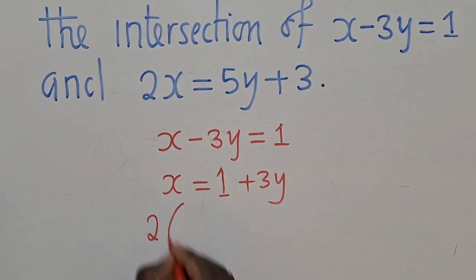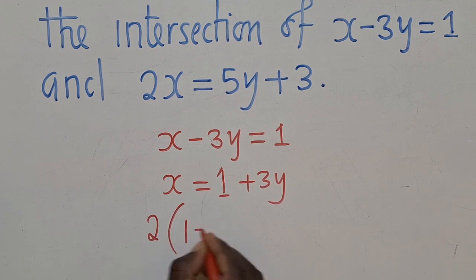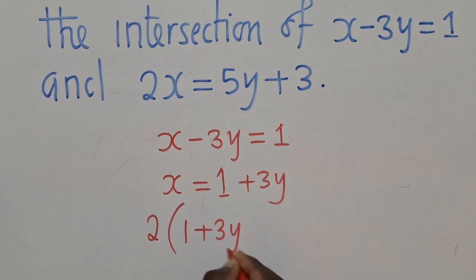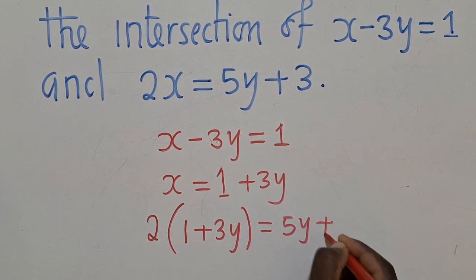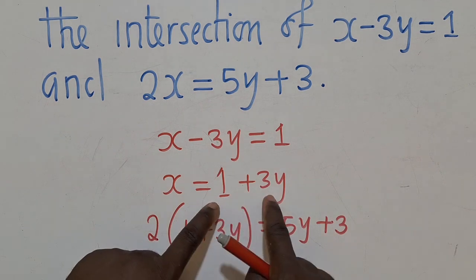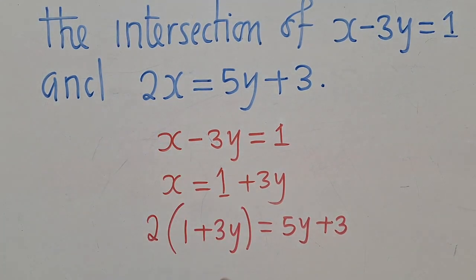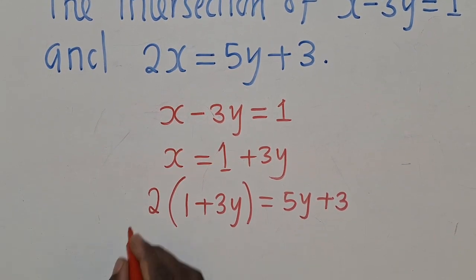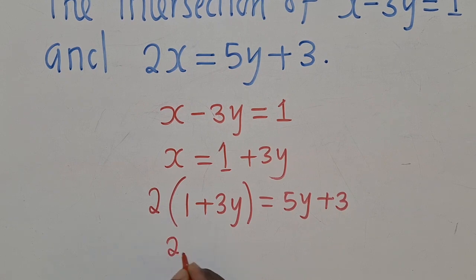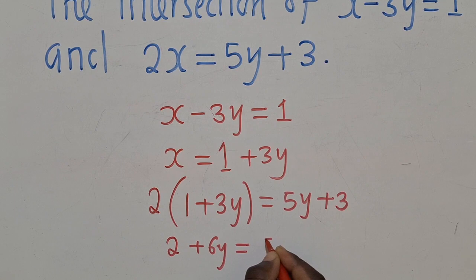So we shall have 2, open bracket, 1 plus 3y, close, is equal to 5y plus 3. So I've substituted, I've just gotten this and put it right here on the other equation. You can see it's right over here. So this entails that we can solve for y. So we shall have 2 plus 6y is equal to 5y plus 3.